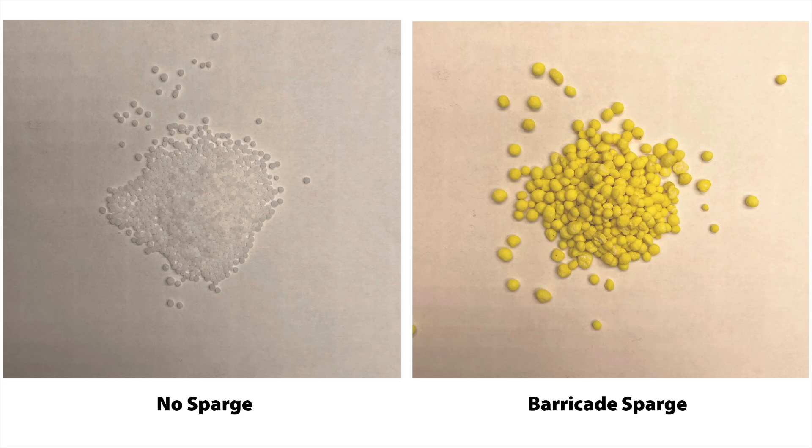If you have a bag of fertilizer and you're asking whether it's sparged or not, there are a few ways to tell. This shows raw urea on the left versus urea sparged with Barricade on the right. Barricade is yellow, so it turns any fertilizer substrate yellow — easy to identify. However, other pre-emergent herbicides like Ronstar, Stegard, or Dimension are clear or essentially clear, providing very little color change to the fertilizer substrate, making it challenging to tell if a blend has been sparged with one of those materials.